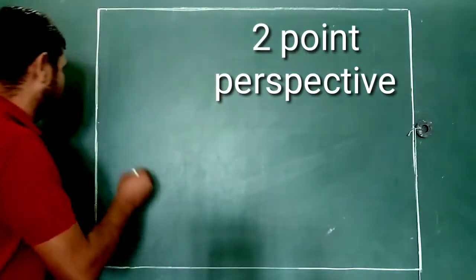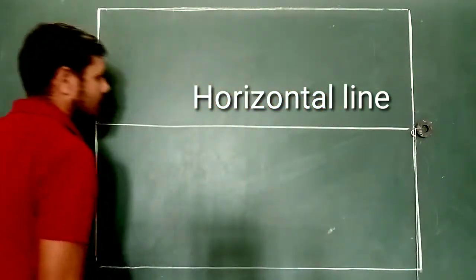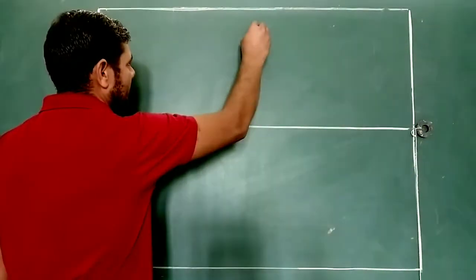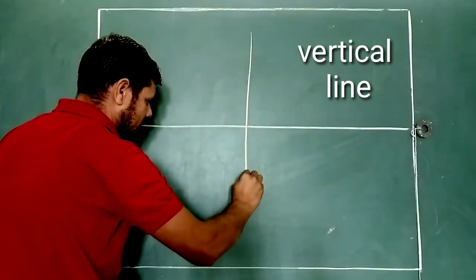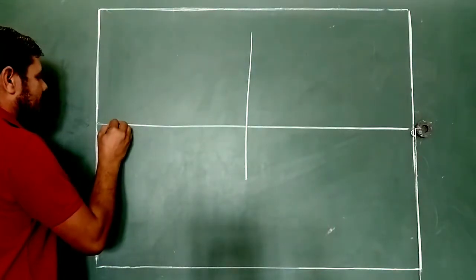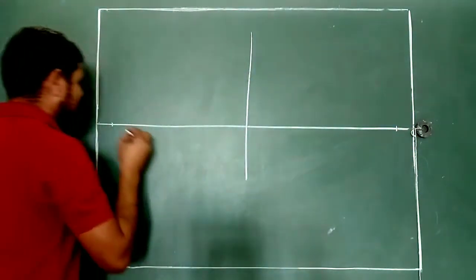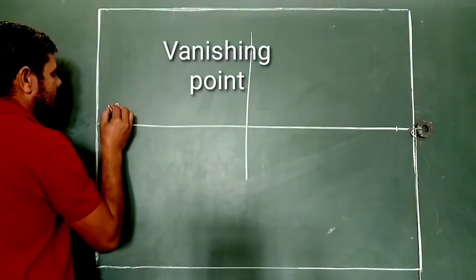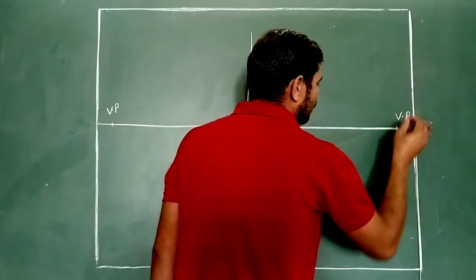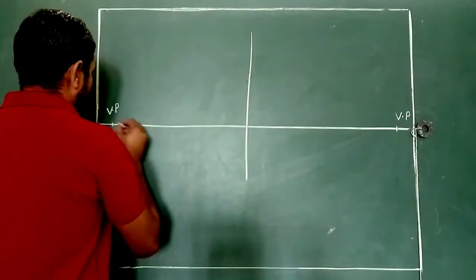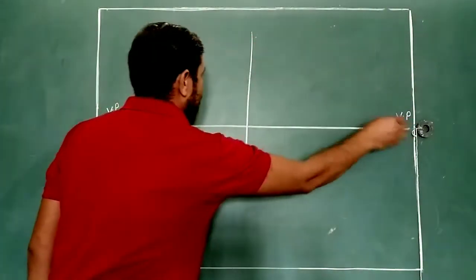Firstly we take our horizontal line like this. Then after we make a straight line. We take two points — one on this side and one on this side. This is our VP. Then after this side also we take one VP.